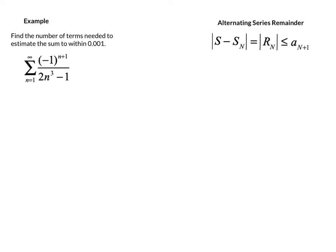In this example, we're trying to determine how many terms we need in a partial sum to come up with an accurate estimate of the infinite sum to within 0.001, and here we're looking at the alternating series (-1)^(n+1) over 2n^3 - 1.